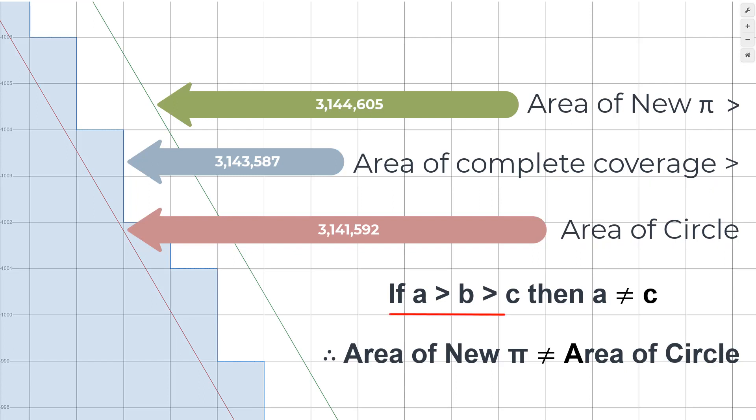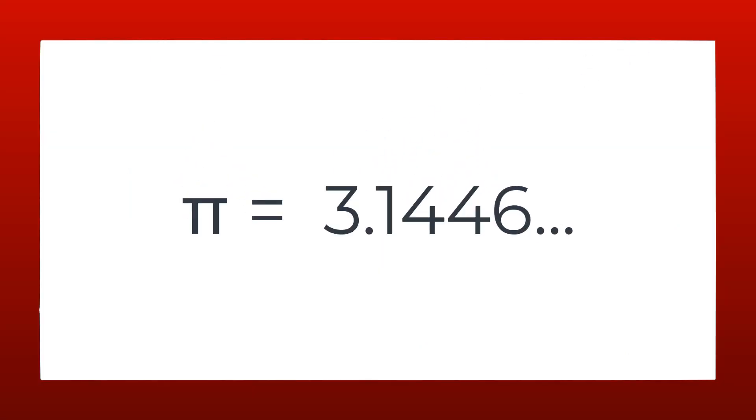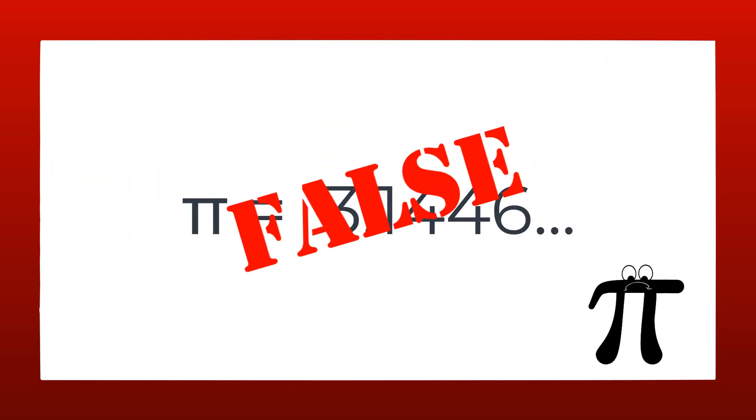So, what do you think? Is it mathematically possible for the area calculated by new pi to be equal to the area of the circle, or is this new value for pi of 3.1446 just a false imposter?